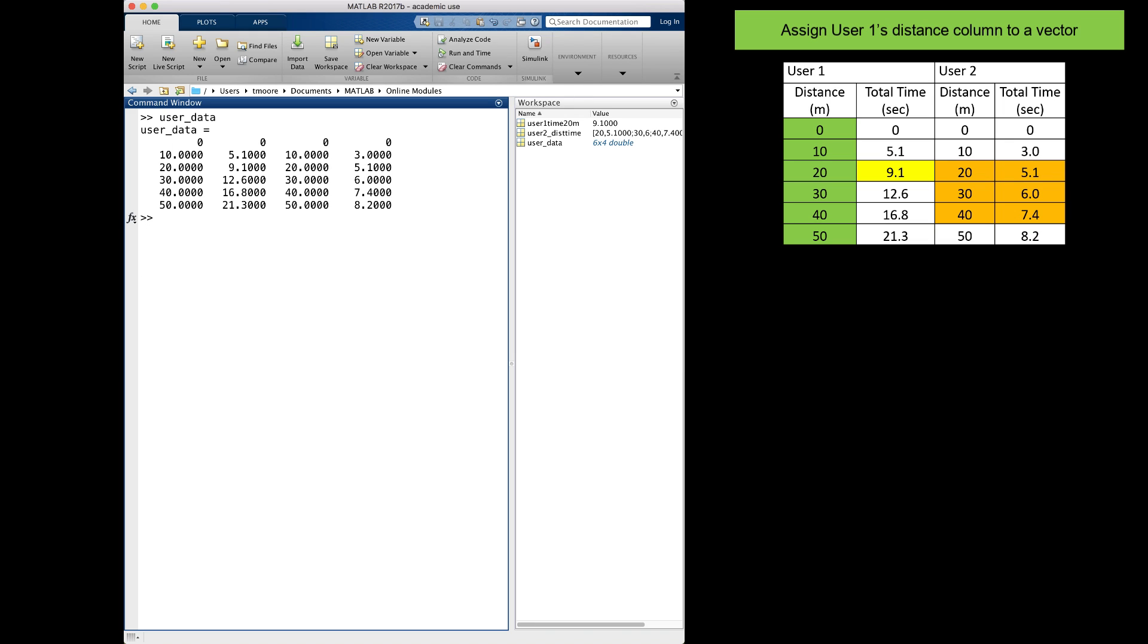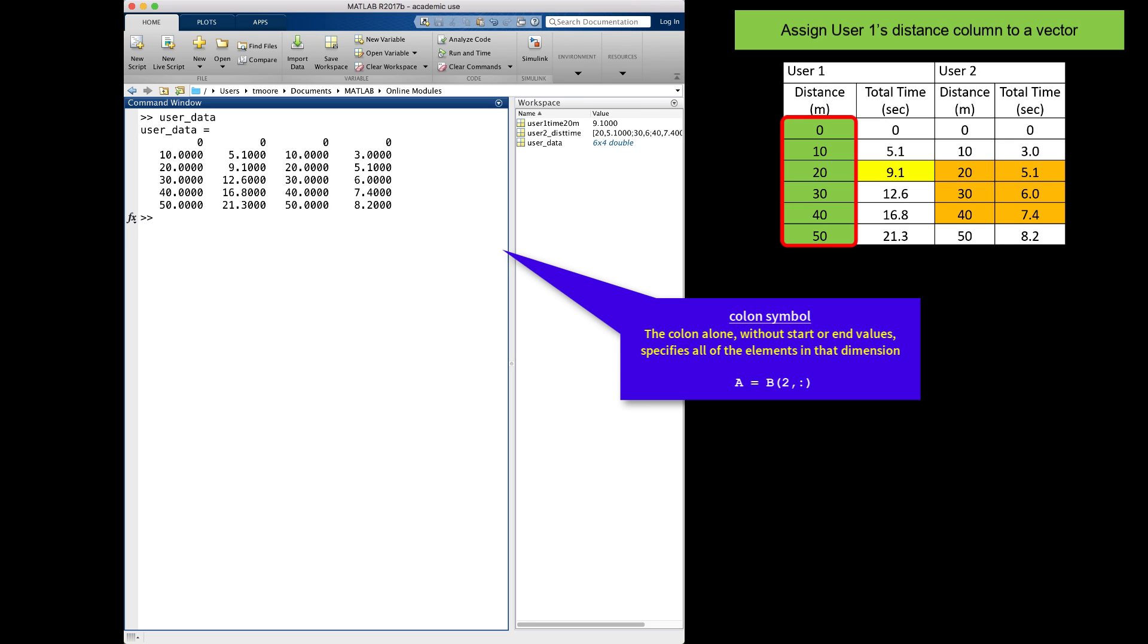The last thing that needs to be done is to copy one of the distance data columns to a variable. MATLAB provides a shortcut for replacing entire rows and columns. A colon designates all. In this case, I want to copy all the rows in column 1, so I will create a variable named user1_dist on the left of the equal sign.